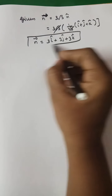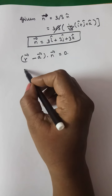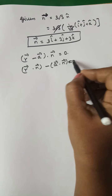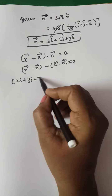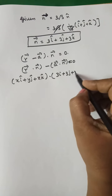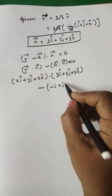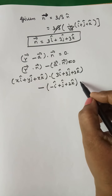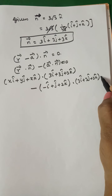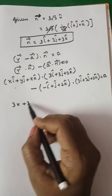Now applying the plane equation R vector · N vector - A vector · N vector = 0. Here R vector = xî + yĵ + zk̂ and N vector = 3î + 3ĵ + 3k̂. A vector is (-1, 1, 2) = -î + ĵ + 2k̂. Substituting and multiplying out: 3x + 3y + 3z.